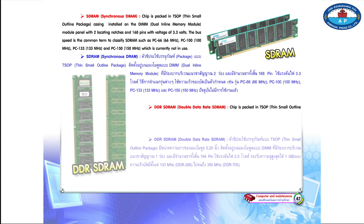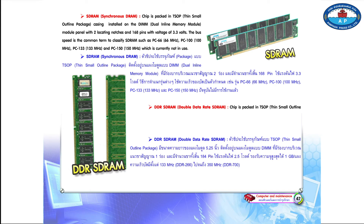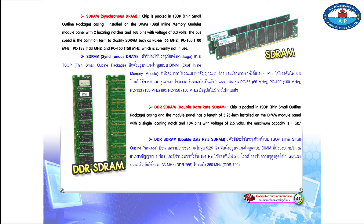DDR SDRAM (Double Data Rate SDRAM) chip is packed in TSOP (Thin Small Outline Package) casing, and the module panel has a length of 5.25 inches, installed on the DIMM module panel with a single locating notch and 184 pins with a voltage of 2.5 volts. The maximum capacity is 1 GB per panel, and bus speed ranges from 133 MHz DDR266 to 350 MHz DDR700.